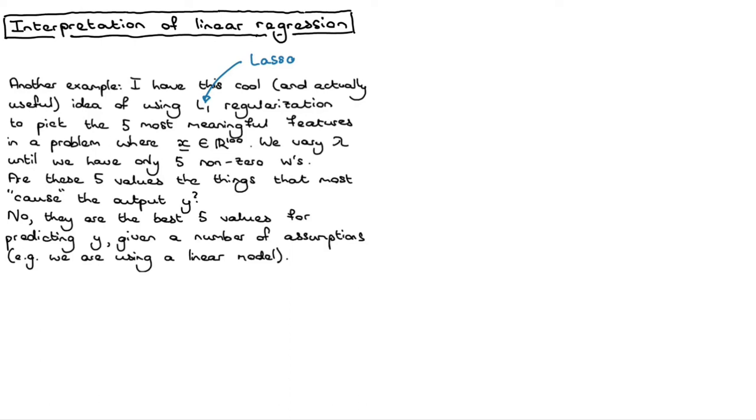And the question is, are these five w's then the things that most cause the output y? No, they're not the five things that most cause the output y. They are just the best five values for predicting y. Given a number of assumptions, things like that we're using a linear model and that we're using a regularization parameter. It could be that actually, you know, the 10th input feature causes y a lot more closely, but that one of the others actually captures that 10th input feature, but also something else that's useful for predicting y.